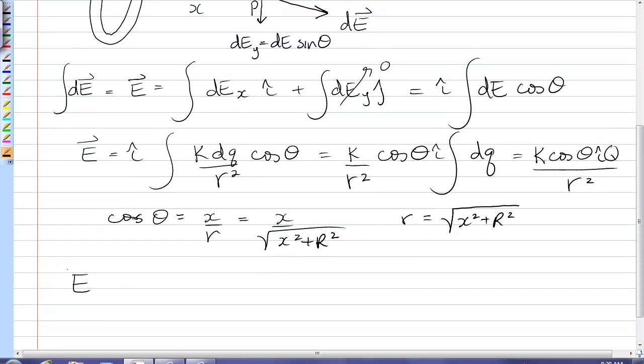Okay, so subbing those into the electric field, I get k. Instead of cos theta, I write x over the square root. I still have my i hat, I still have my Q. And instead of r squared, I write x squared plus R squared. So gathering together those bottom terms and making this look a little nicer,